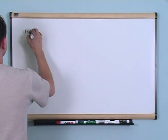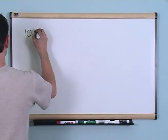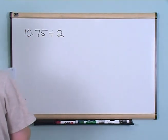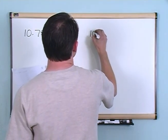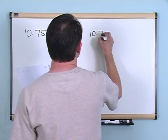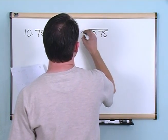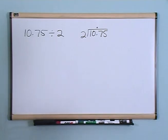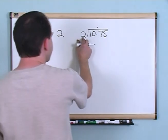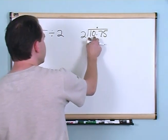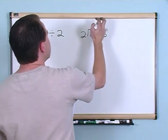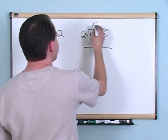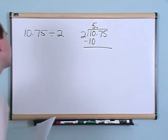What if you had 10.75 divided by 2? You would write 10.75 divided by 2, and you would write your decimal point for your answer right above there. Then you just try like usual. Can 2 go into 10? Yes it can, 5 times — 5 times 2 gives you 10. And then you go ahead and subtract.